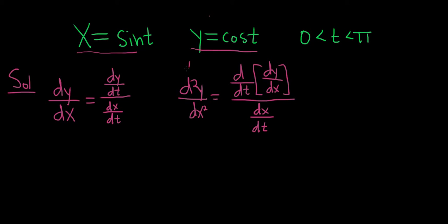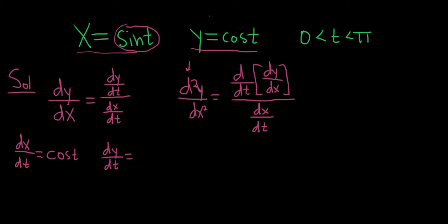Whenever the second derivative is positive, it's concave up; whenever it's negative, it's concave down. Let's start by finding dy/dx. dx/dt is the derivative of x with respect to t. Since x = sin(t), its derivative is cos(t). And dy/dt is the derivative of cos(t) with respect to t, which is -sin(t). So dy/dx = (dy/dt) / (dx/dt) = -sin(t) / cos(t).